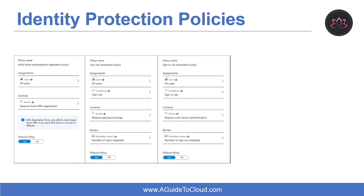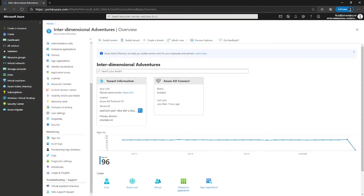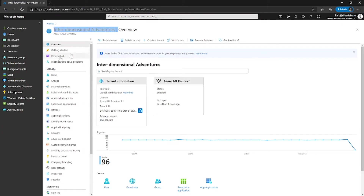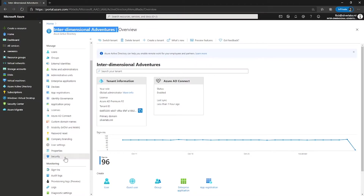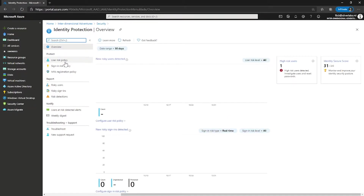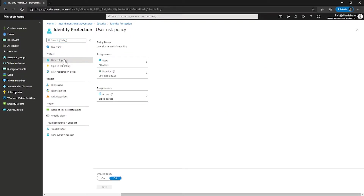Let's first understand what are the three default policies available for identity protection. Azure AD Identity Protection includes three default policies that administrators can choose to enable. These policies include limited customization but are applicable to most organizations. Go to your Azure AD and under Security, click on Identity Protection — this is where you can see these three policies. All the policies allow for excluding users, such as your emergency access or break-glass administrator accounts.